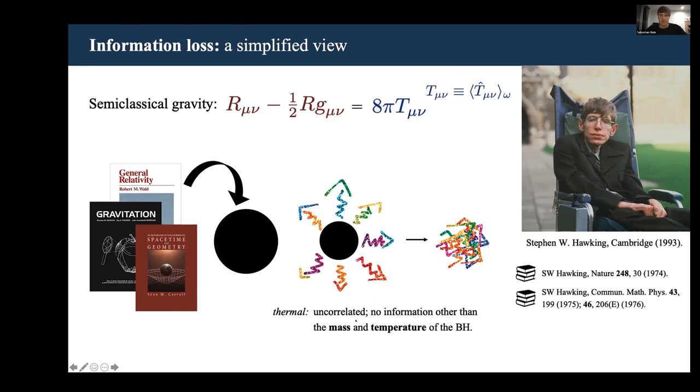This is a problem, because from the mass and temperature alone, you cannot reconstruct what fell into the black hole. But on the other hand, quantum theory is unitary, so for all we know, this tells us that information should be preserved.